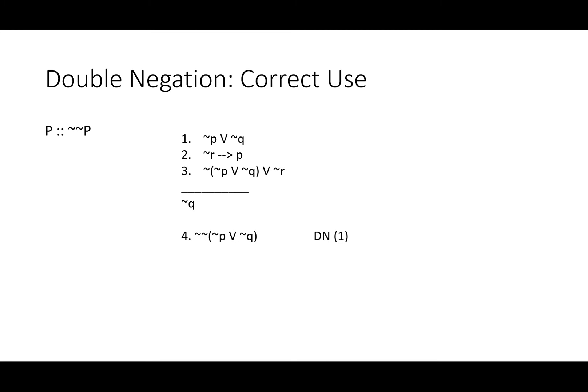First, we can double negate the entire first line. That will allow us to do a disjunctive syllogism on lines three and four. As we have negated one half of that. That gets rid of a lot of the mess.